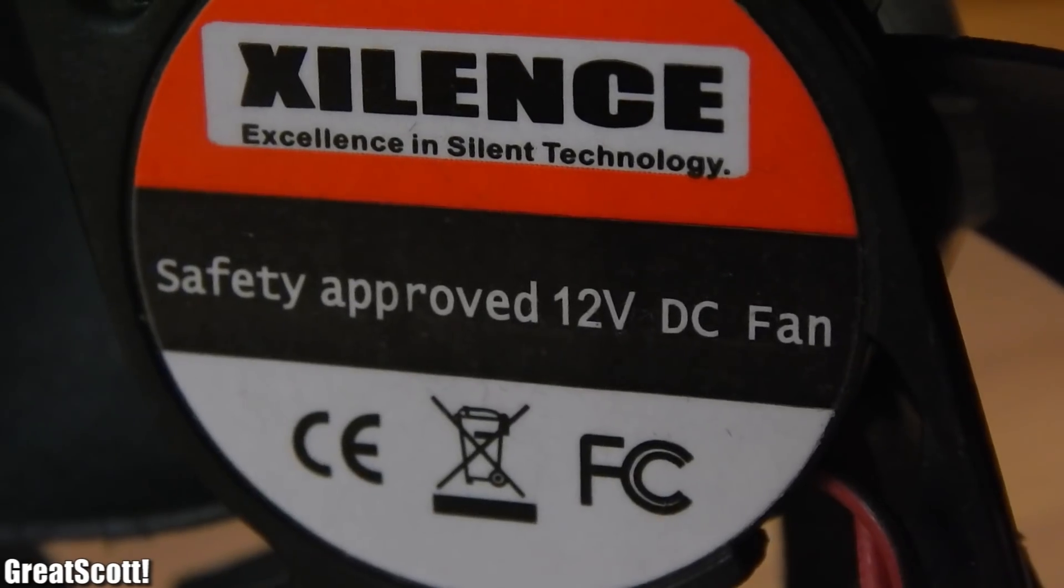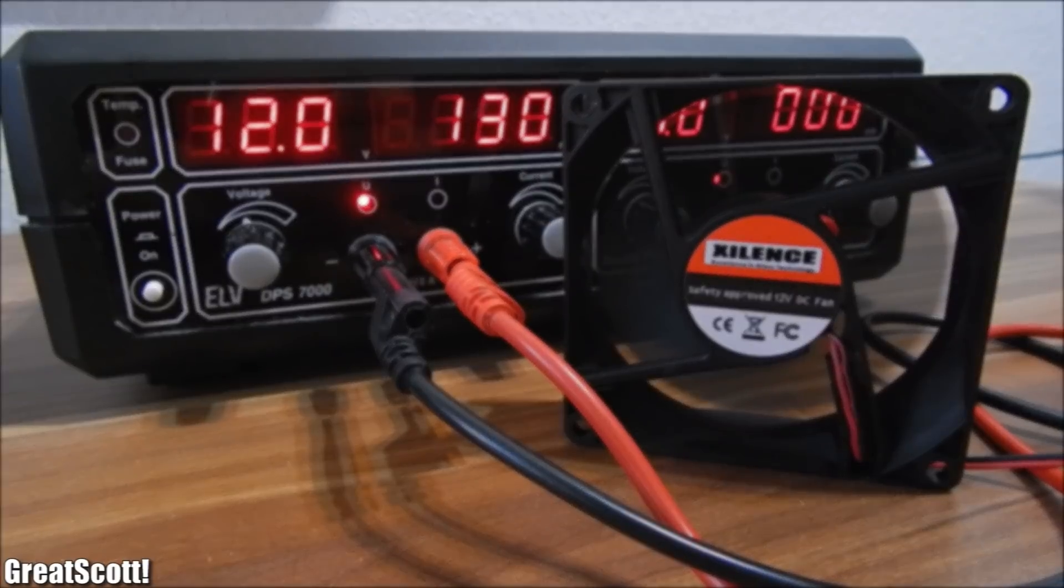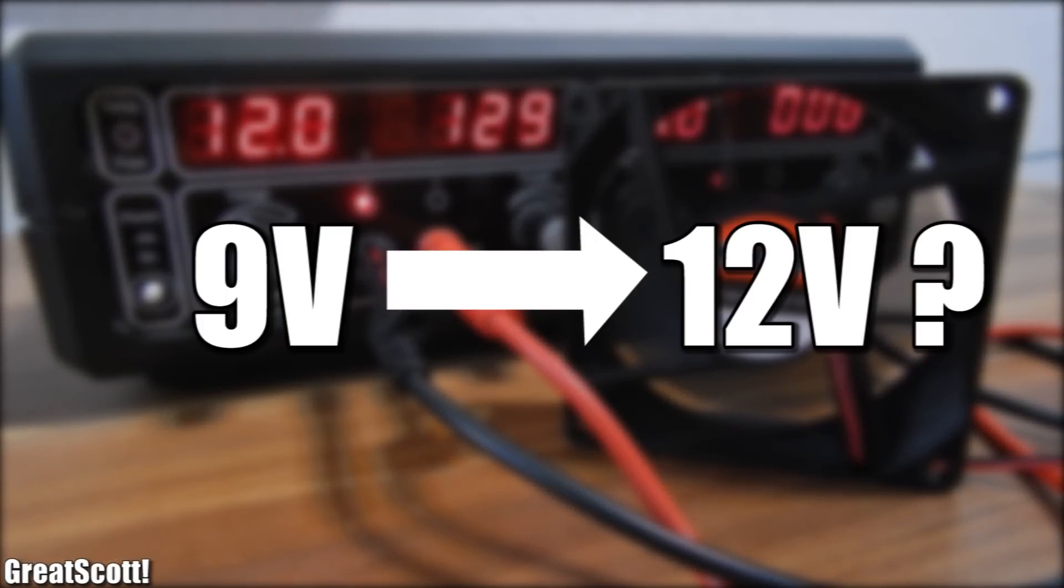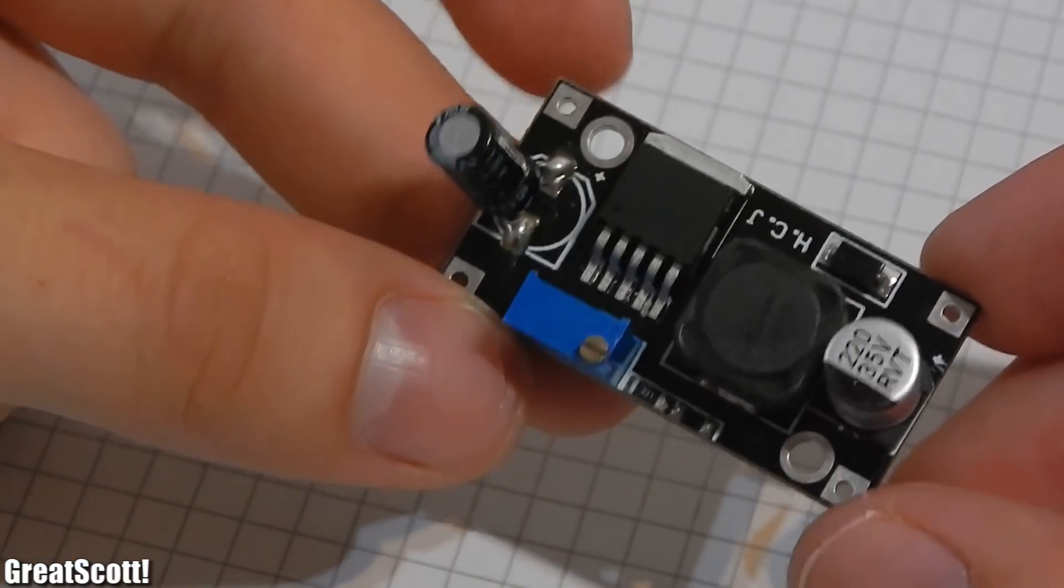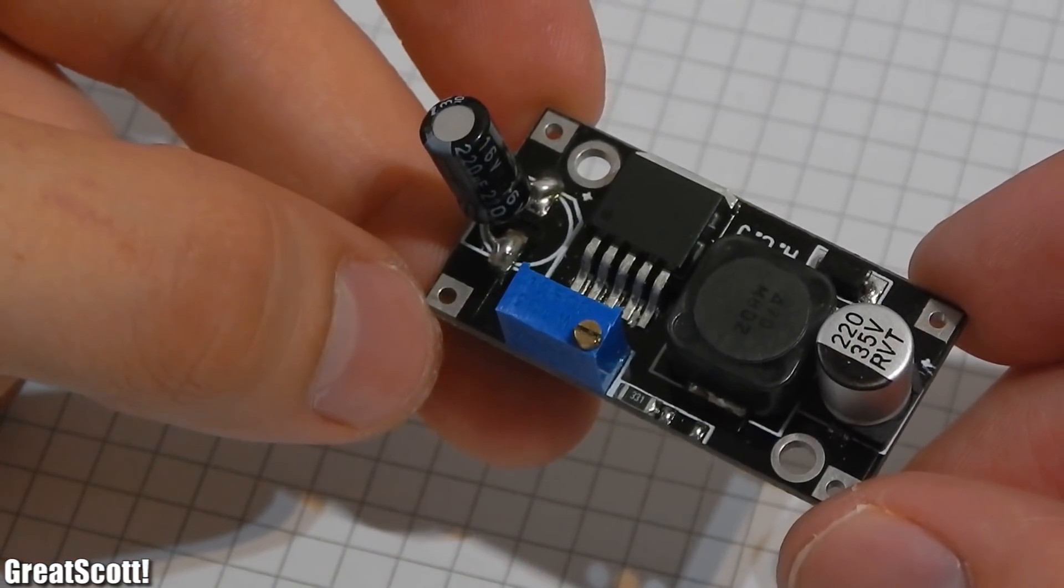As you can already tell, the normal voltage for such a fan is 12 volts. How to get 12 volts from 9 volts you may ask? The solution is a voltage booster circuit. I got this one from China for cheap.